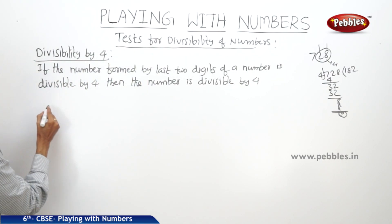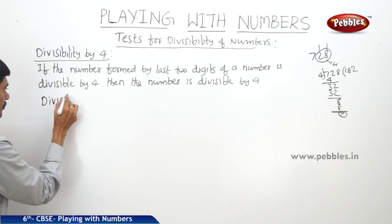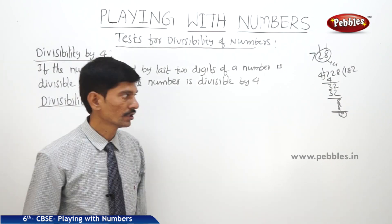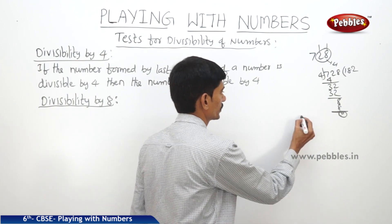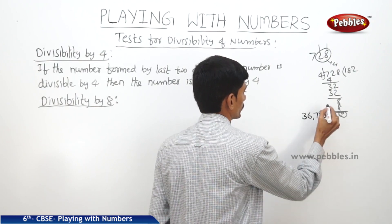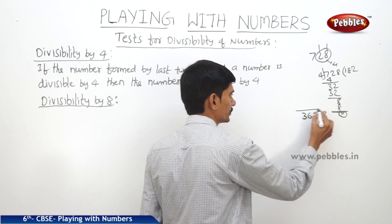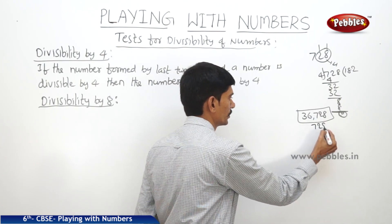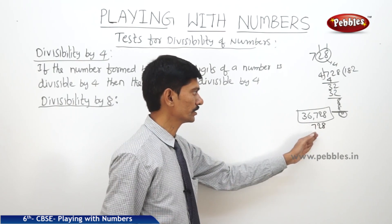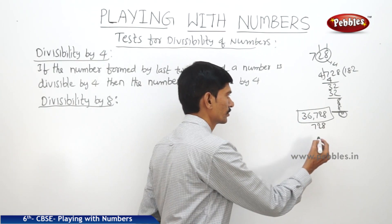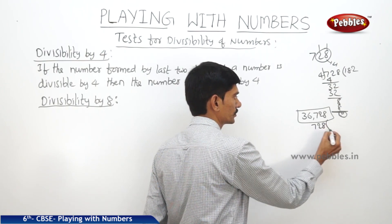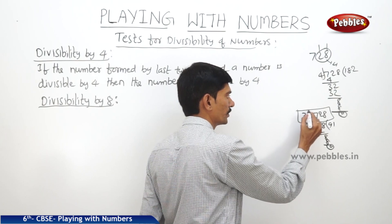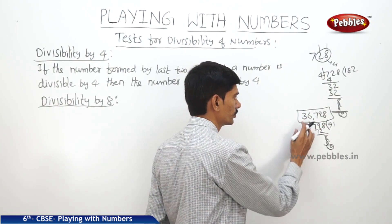Now the next rule is divisibility by 8. For example, take 36,728. We check whether this number is divisible by 8 by taking the number formed by the last 3 digits, which is 728. If the number formed by the last 3 digits is divisible by 8, then the given number is also divisible by 8. Checking 728: 8 times 9 is 72, then 8 times 1 is 8, remainder 0. So 36,728 is also divisible by 8.